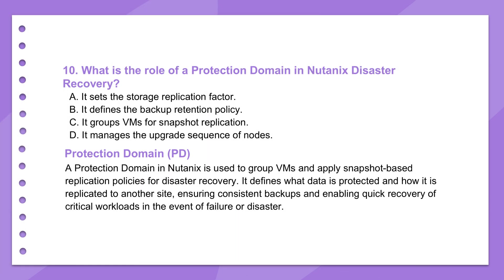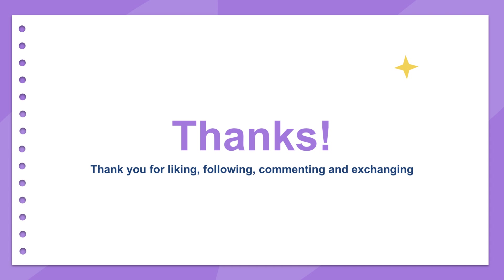Tying replication and availability together for disaster recovery, there's a concept called a protection domain, or PD. The source describes it as a logical grouping — you put VMs and maybe volume groups that need to be protected and replicated together into a PD. It's the container where you define what gets backed up or replicated via snapshots, how often that sets your RPO, and where it gets replicated to, like another Nutanix cluster at a DR site. In a disaster, you activate that whole group at the recovery site, bringing back a consistent group of applications. It's the core construct for Nutanix's native snapshot-based DR.